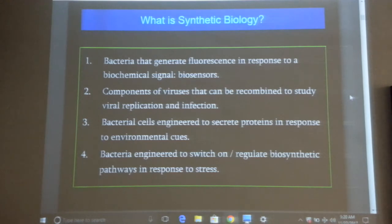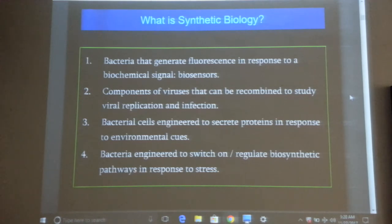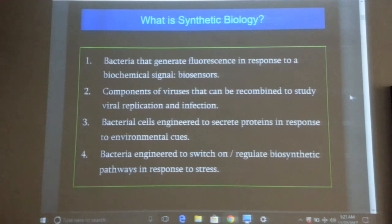Viruses and viral plasmids are used for injection. Bacterial cells can be engineered to secrete proteins in response to environmental cues. For instance, you want bacteria to remain in the soil in your garden, and only under certain circumstances — when there is an environmental change — it will secrete a plant growth hormone. Maybe you adjust the concentration of nitrogen in the soil and then the bacteria release the hormone, but not under other circumstances. All of this can be done by using the right promoter. The promoter is a switch — you use the right promoter and you can switch it on or off. You can switch on and switch off pathways in response to stress.